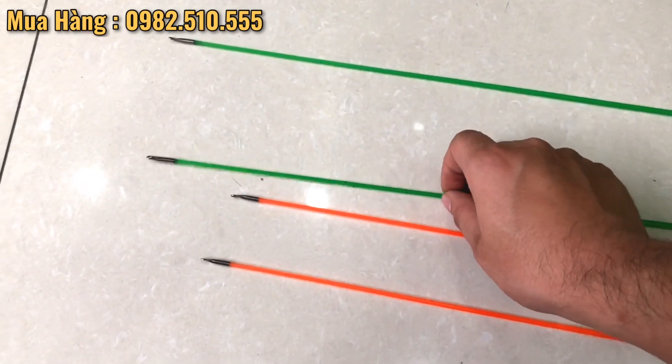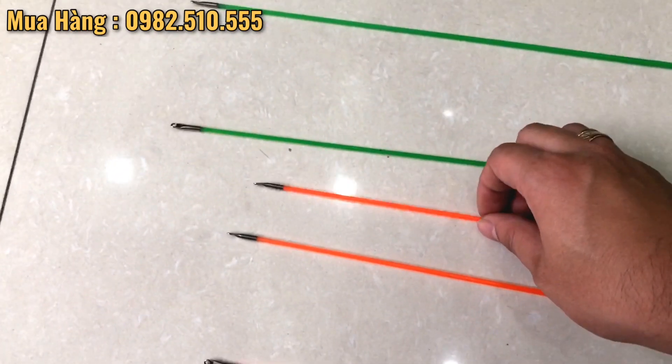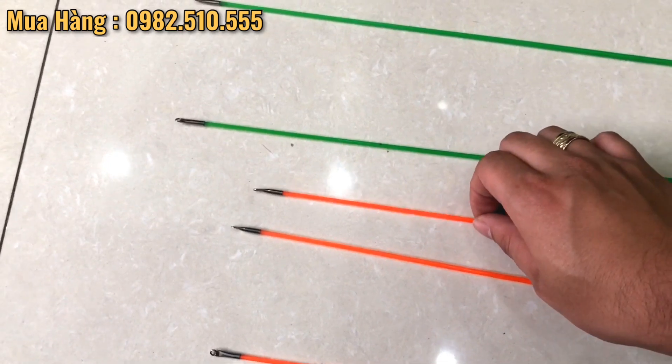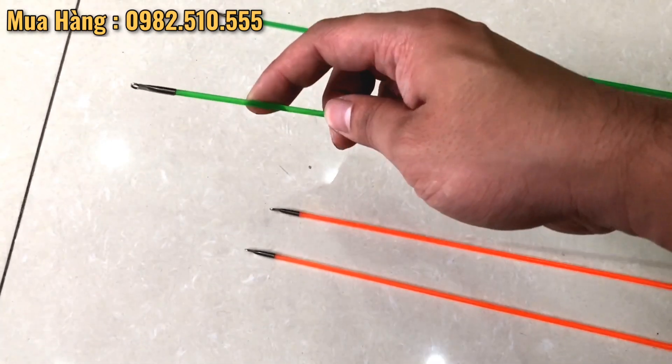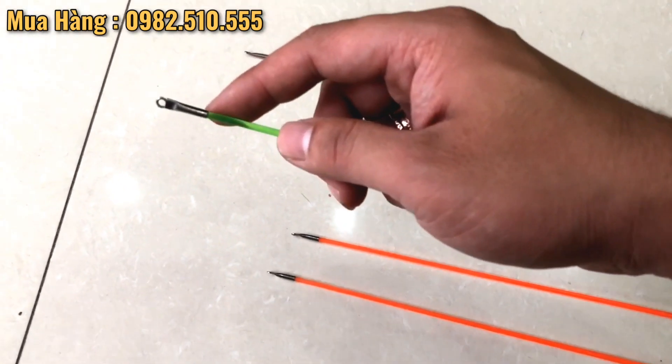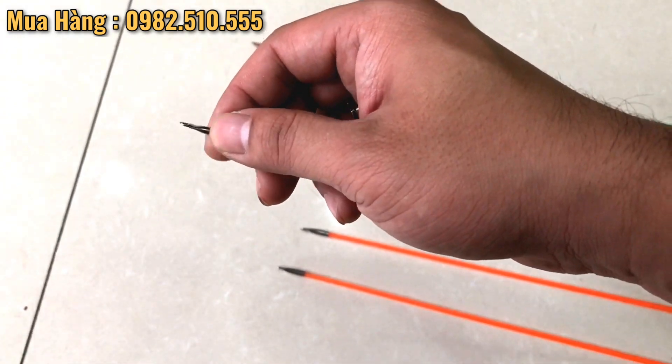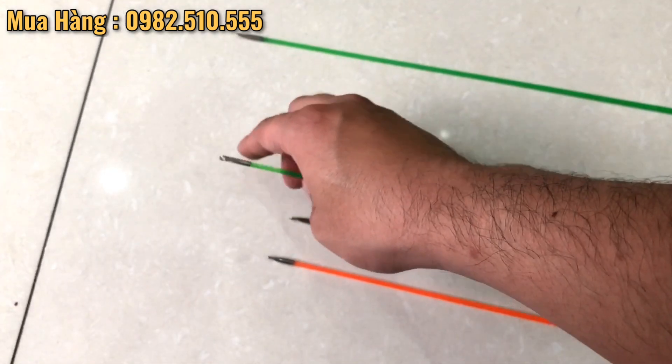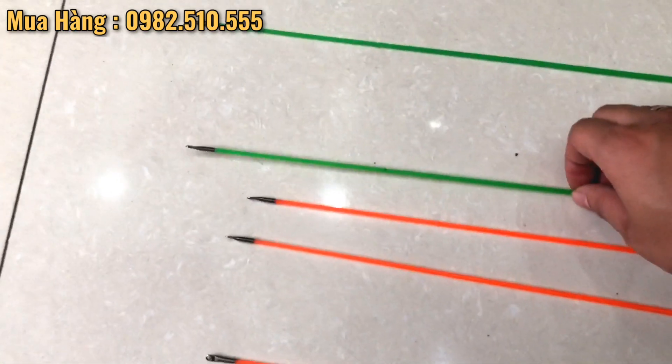Hôm nay shop em xin thân hạnh giới thiệu cho các bác một mẫu cần câu tôm, câu mực có 2 màu, màu cam và màu xanh, có chiều dài là 1m3 và 1m2. Hiện tại được bọc lớp thép để cho các bác cuốn luồn cước bên trên.